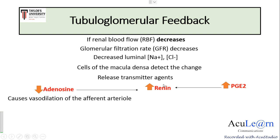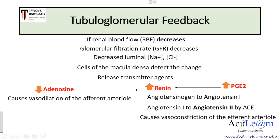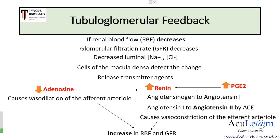Both decreased adenosine and increased prostaglandin E2 stimulate increased renin release from the granular cells. This renin converts angiotensinogen to angiotensin 1, which is then converted to angiotensin 2 by angiotensin-converting enzyme. Angiotensin 2 is a vasoconstrictor and causes vasoconstriction of the efferent arteriole.